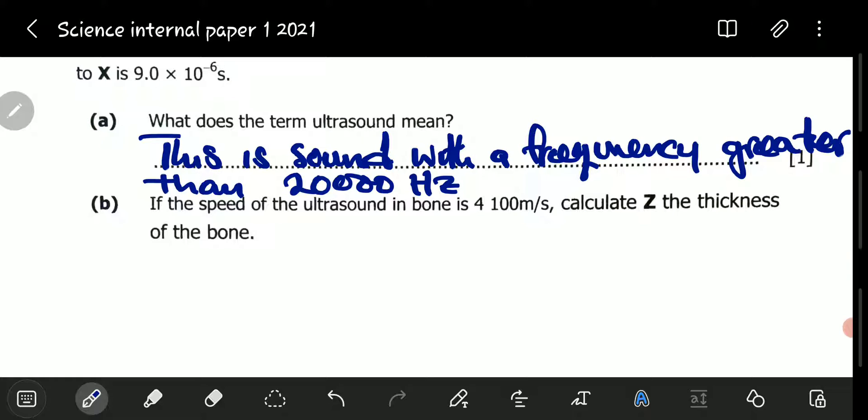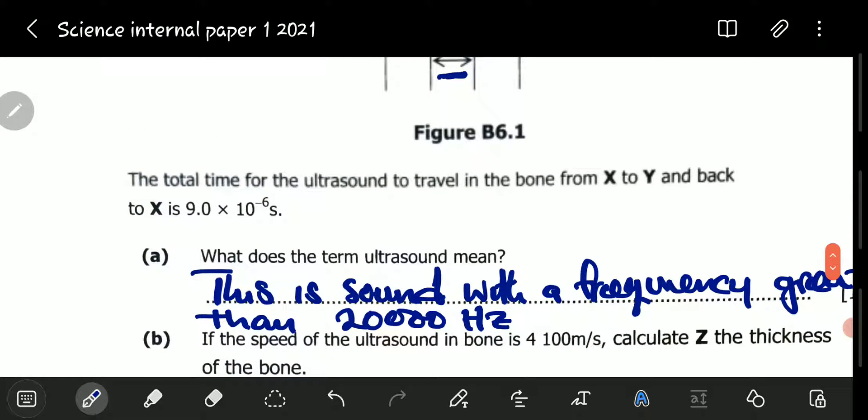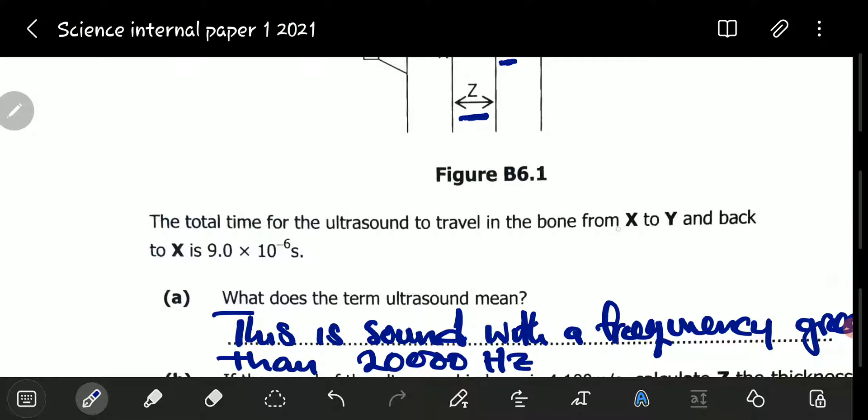Part B, if the speed of the ultrasound in bone is 4,100 meters per second, calculate Z, the thickness of the bone. Now, let's get back to this one. They're saying that the total time taken for sound to move from X to Y and back to X is 9 times 10 to the power negative 6 seconds.